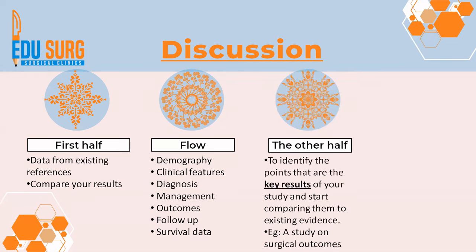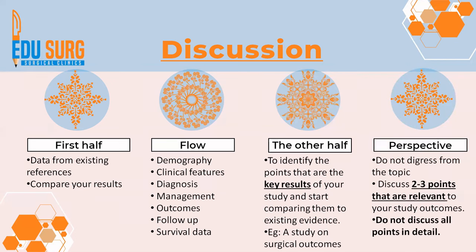In the other half of the discussion, this is the area where you focus on your key points. Usually, don't have more than two or three key points that are relevant to a study. If you discuss all the points in your data like a thesis, the readers get confused. So do not discuss all points in detail. The other half is limited to discussion of only the key results of your study in comparison to existing evidence to highlight the outcomes. This way you will not digress from the topic or overburden the reader with too much information.